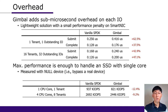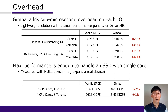Jimbo should be lightweight to run on SmartNIC. We compare the overhead of Jimbo with vanilla SPDK. Jimbo adds up to 6.25 microseconds of overhead in the IO processing path. When measuring maximum achievable performance by replacing a physical device with a null device, Jimbo performs up to 12.4% less than vanilla SPDK. However, it is still sub-microsecond and does not degrade actual device performance. Jimbo can handle up to 821,000 IOs per second on a single ARM core, which is higher than the maximum performance of our testbed SSD.